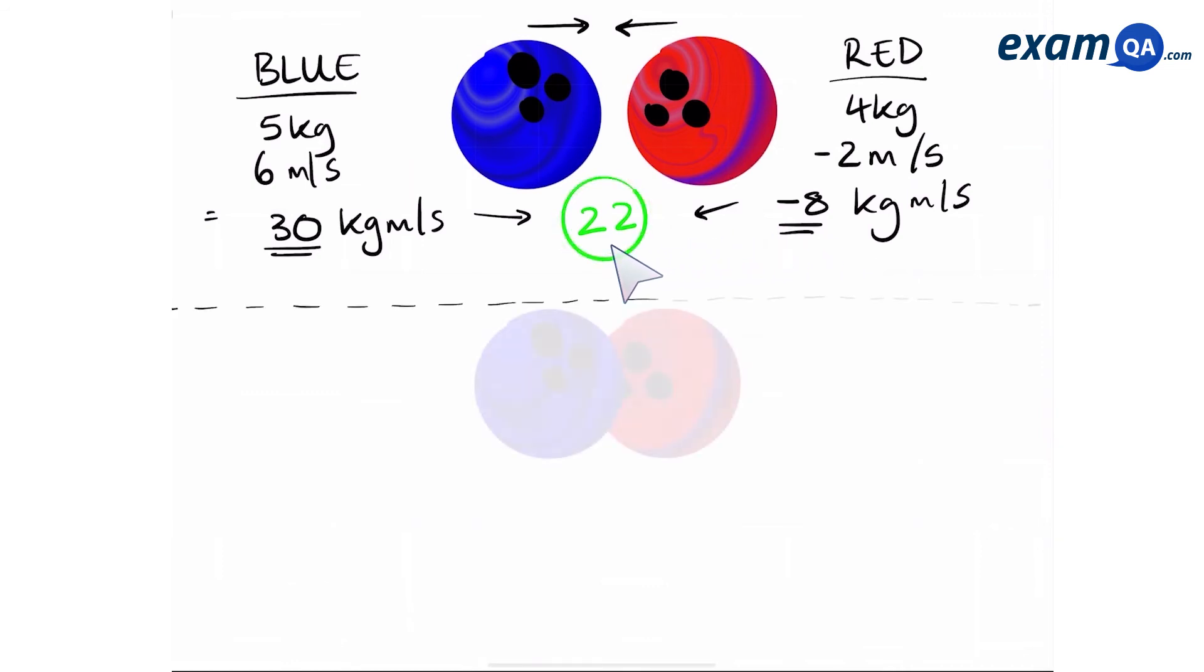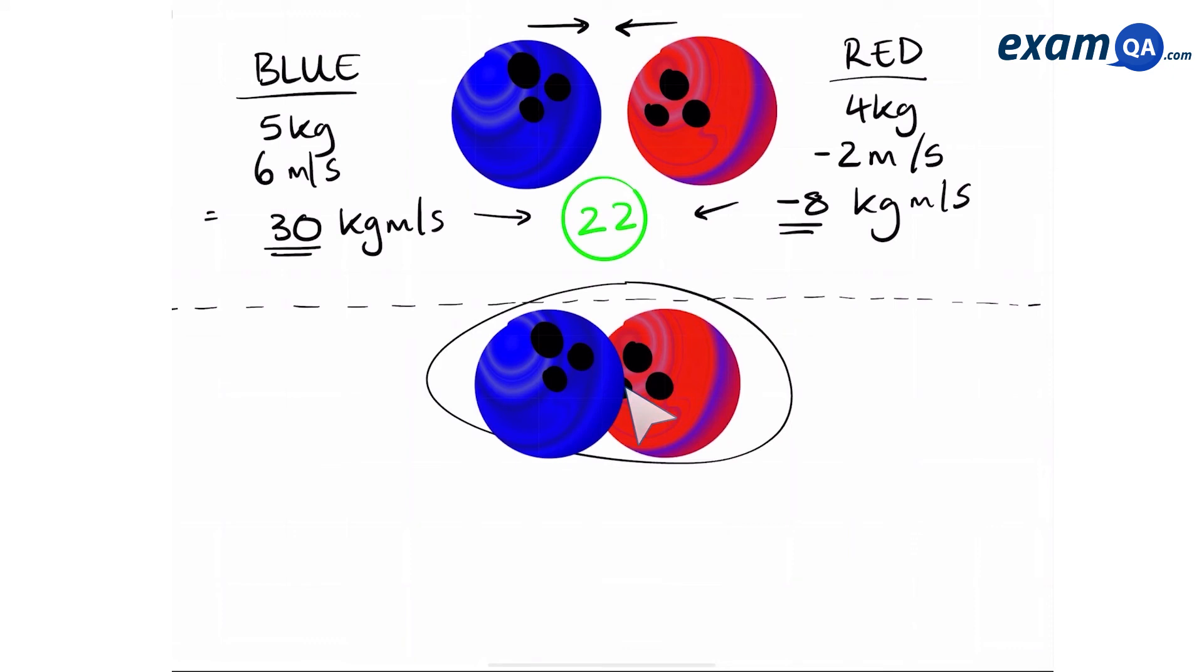Now the balls have collided, so you can assume that they are one unit. What we want to know is which direction this unit is moving towards. Is it left or right? So we're going to rearrange our equation and make velocity the subject. Remember, momentum is equal to mass times by velocity.